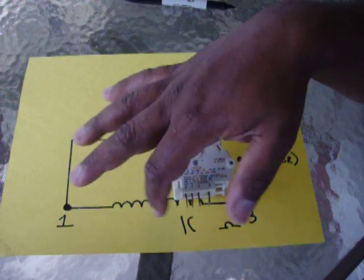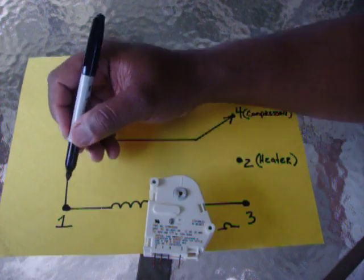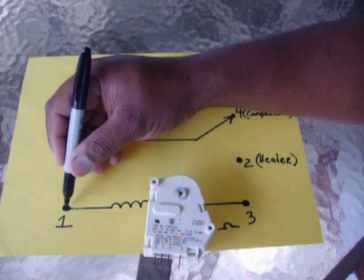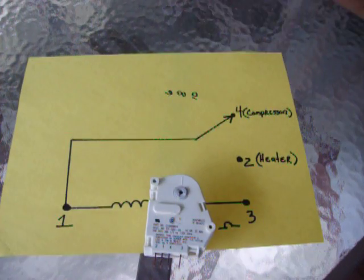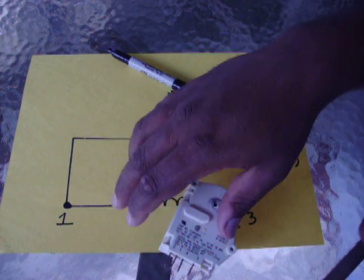Now that we know that the motor section of it is good, now we want to check the switching on it. We're going to check from terminal one to terminal four. And since this is a switch, there's no resistance. All we're going to look for here is continuity.